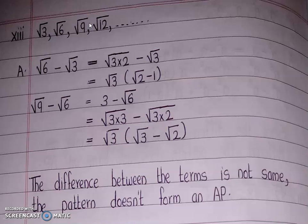Third term minus second term: √9 − √6. Since √9 = 3, we write 3 as √3·√3, so 3 − √6 = √3·√3 − √3·√2 = √3(√3 − √2). Comparing the first and second differences — √3(√2 − 1) versus √3(√3 − √2) — they are entirely different. So the series does not form an AP.